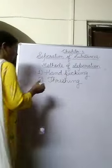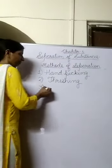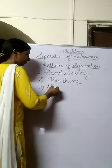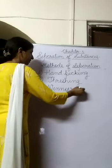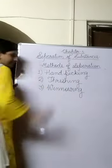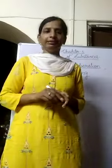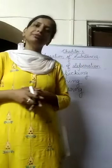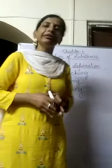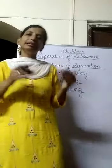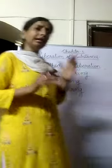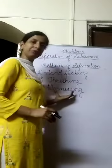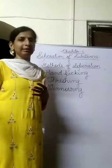The next method we are going to discuss is winnowing. The grains which we obtain in the field have husk present with them. For example, along with wheat grains, husk is also present. Farmers adopt this method — winnowing — to separate grain from husk.